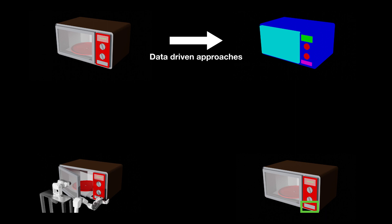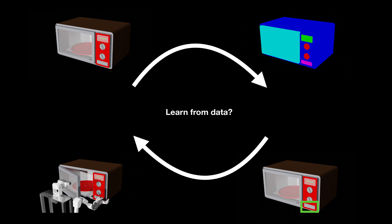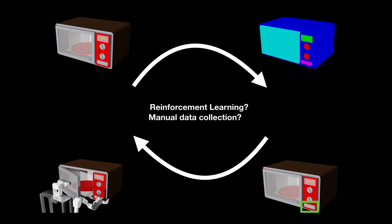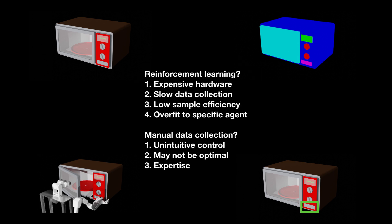We have seen that data-driven approaches have been hugely successful in computer vision. So can we apply this same method to interaction and manipulation research? One possible way is to just let the robot do all these things in the real world and collect real-world data — for example, using reinforcement learning to let the robot explore the world, or manually controlling the robot to collect interaction data. However, using reinforcement learning to explore the world could easily damage expensive robot hardware, and it usually has low efficiency and tends to overfit to specific agents and environments.